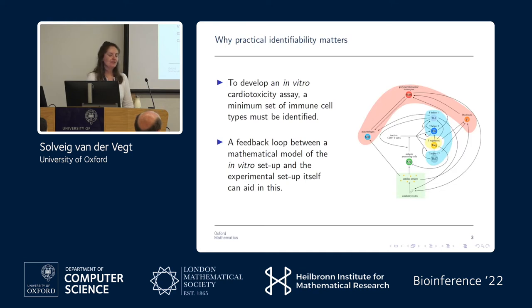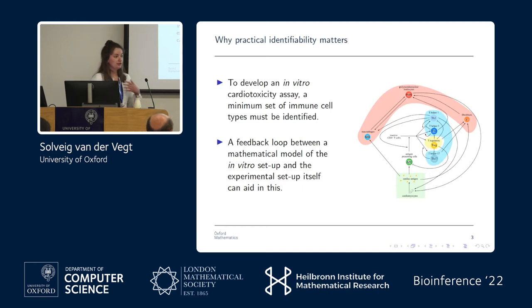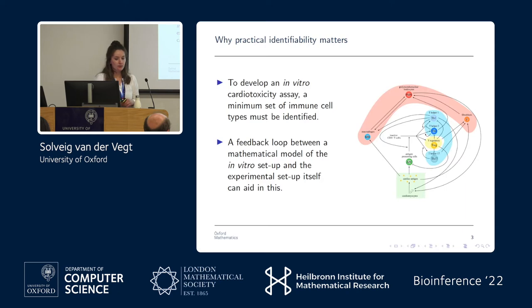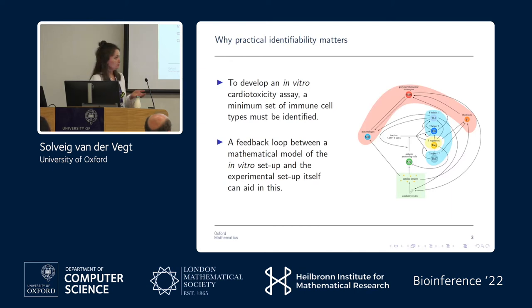What we want to do is build a mathematical model of autoimmune myocarditis, use that to determine the minimal set of essential immune cells that should be in this in vitro cardiotoxicity assay to realistically reproduce what is happening in patients and be able to confidently assess cardiotoxicity of new drug compounds. Ideally we would set up a feedback loop between our mathematical model, which can inform design of our in vitro setup, and data from our in vitro setup to validate our model.